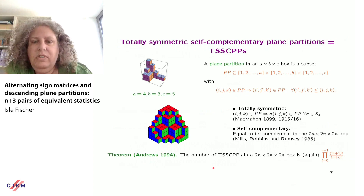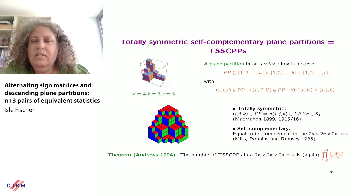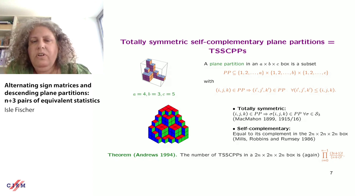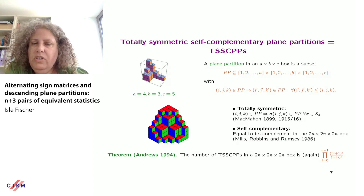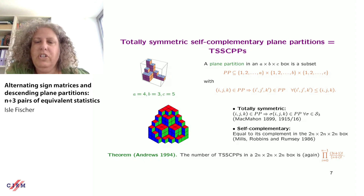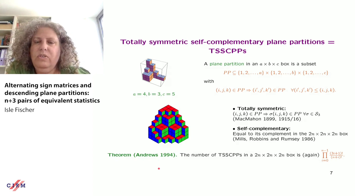The third type of object: totally symmetric self-complementary plane partitions. A plane partition is a pile of cubes in a box such that you always go down when walking away from the origin. Totally symmetric means permuting coordinates leaves the plane partition invariant. Self-complementary means taking the complement in the box and rotating gives back the same plane partition. Andrews proved in 1994 that these are also counted by the same product formula.